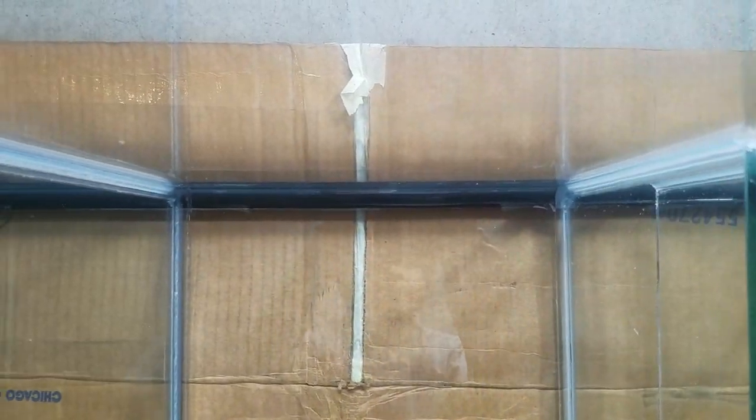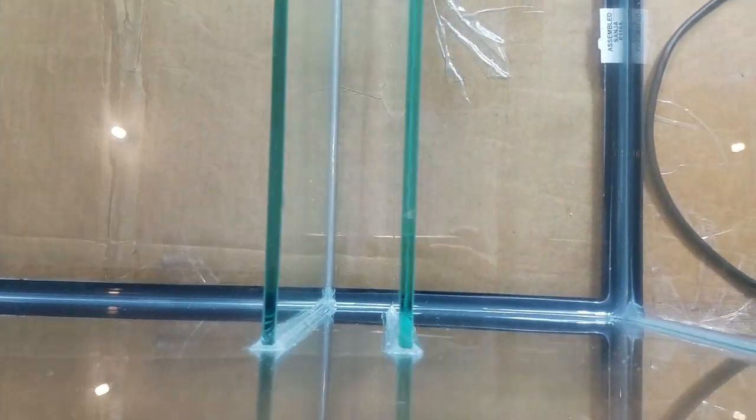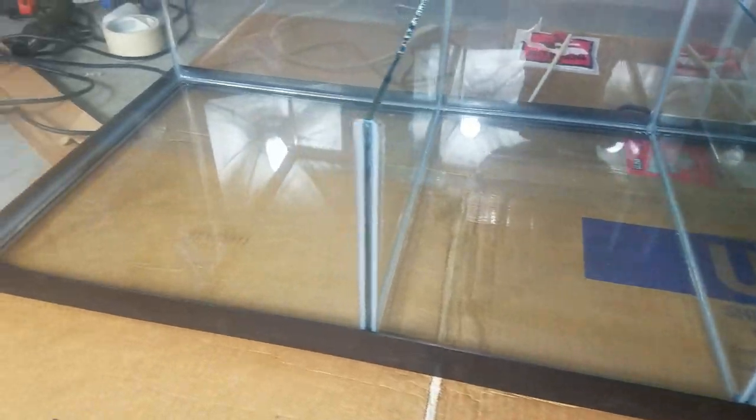Alright guys, thanks for watching. That's going to do it for this build. Pretty simple process. You can certainly do one yourself. Remember to get GE Silicone 1. You can put in a refugium compartment, put taller baffles, shorter baffles, more compartments. The only limit is your imagination.